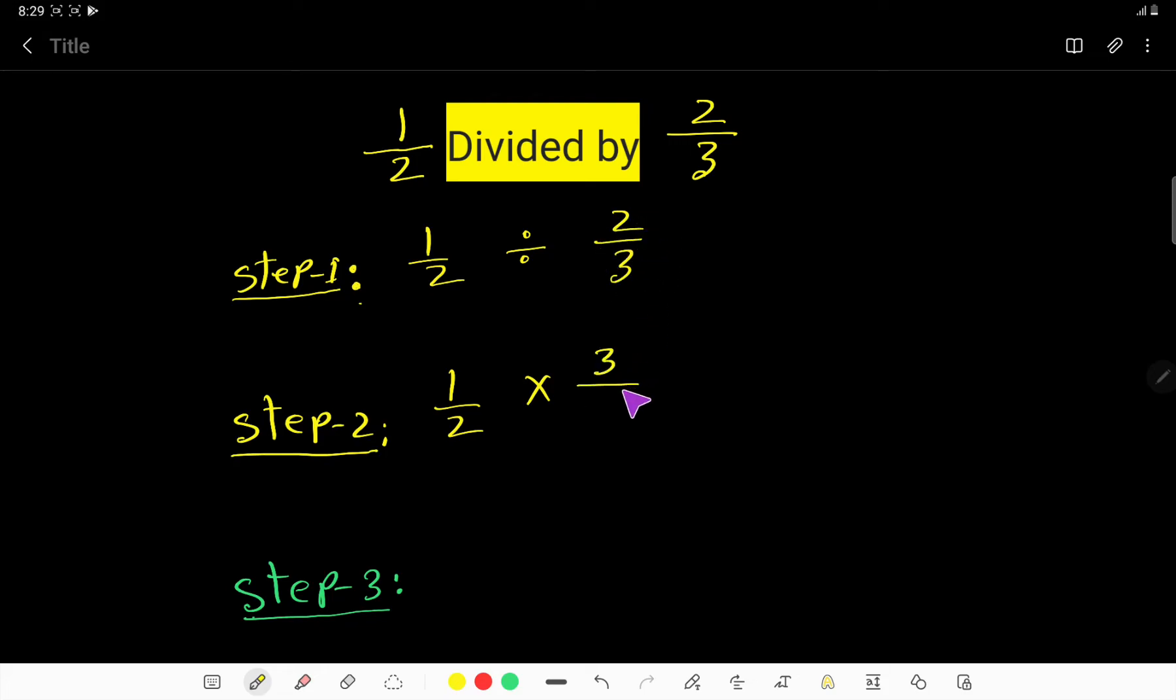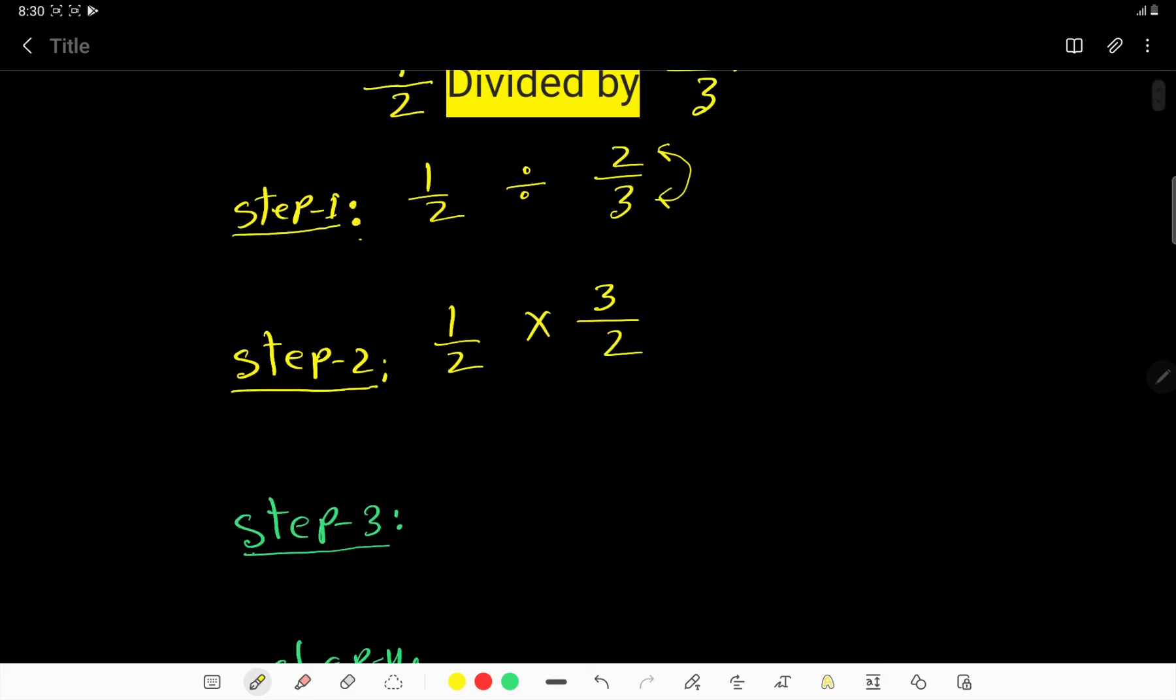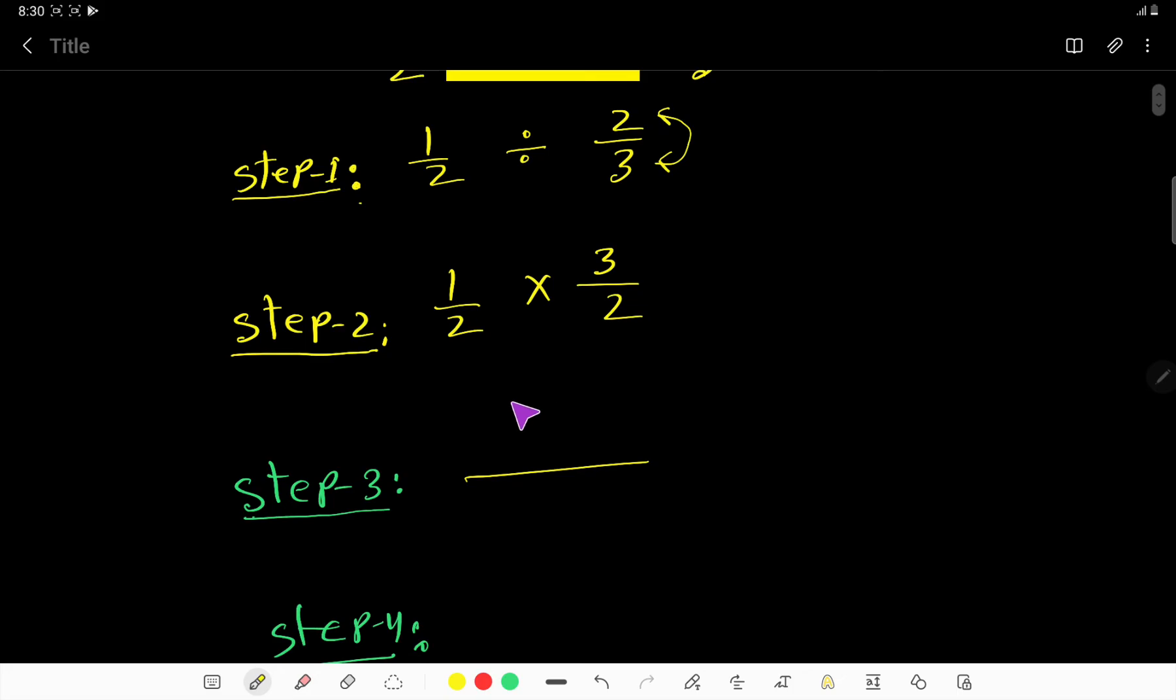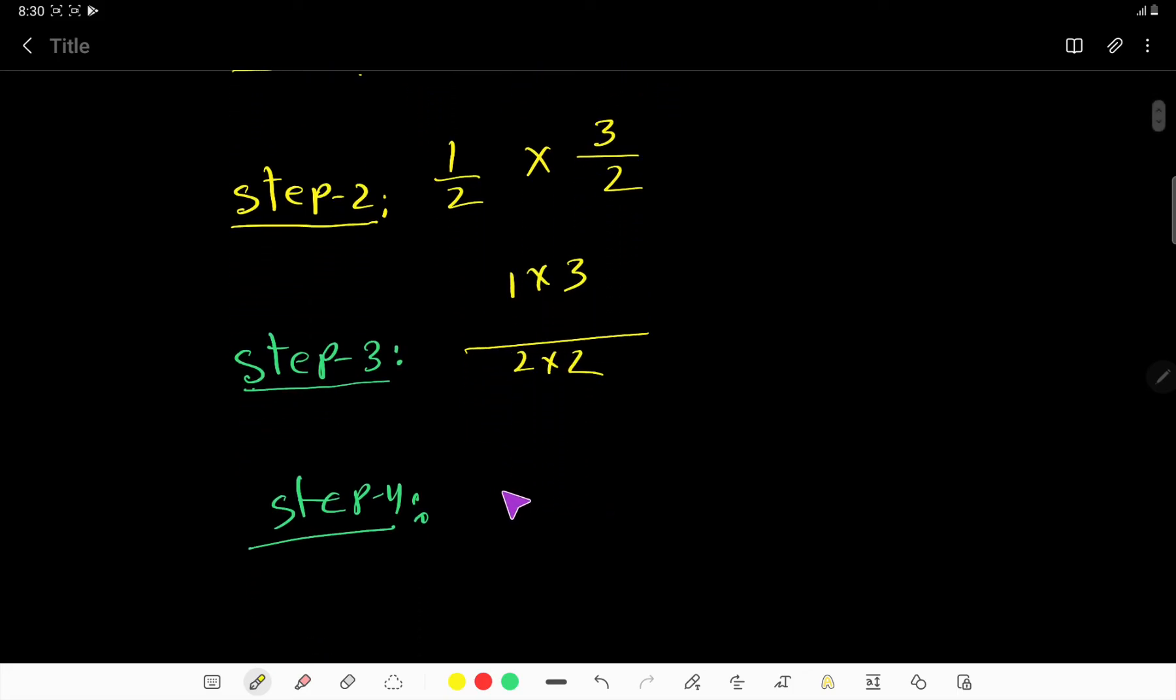take the reciprocal of this fraction, that is the second fraction. Reciprocal fraction means you have to change the position of numerator and denominator. Now you have to multiply top to top and bottom to bottom, so you are getting